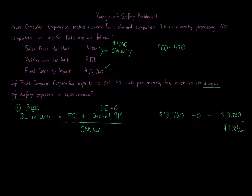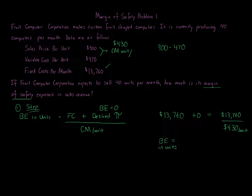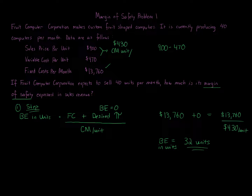Dividing $13,760 by $430 per unit gives us the break-even in units. Remember, you always round up — even if it were 30.23, you'd round up to 31. Here the break-even is 32 units. That is step one complete.